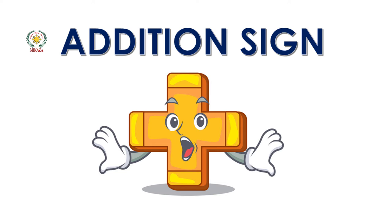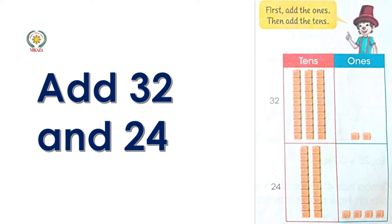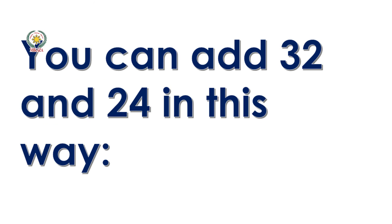Now what do we do? Add two digit numbers. Add 32 and 24. Now we add 32 and 24. What do we do with addition? First add ones, then add tens.